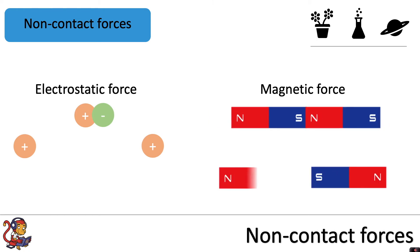And on the other hand, if you had two like poles together, they would experience a force which would mean they would repel each other.